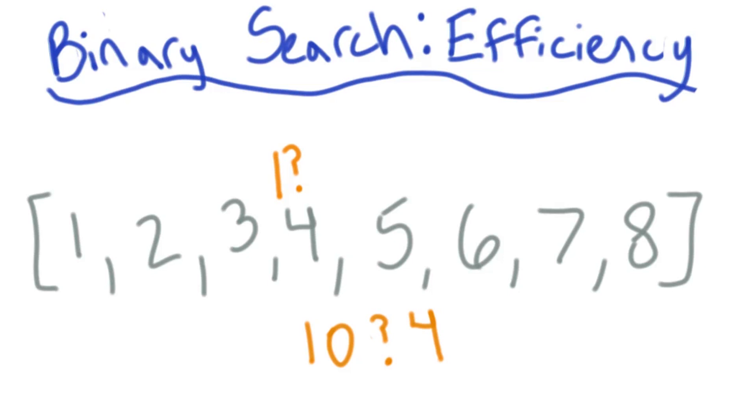Just like before, we'll check whether our number is bigger or smaller than the one in the middle. And since our number is bigger, now we only need to look at the second half of the array.